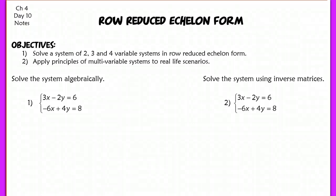For day 10, we are now going to be using row-reduced echelon form to solve systems. I've started off here with two problems. Both are the exact same, but we're going to use two different methods to solve them.